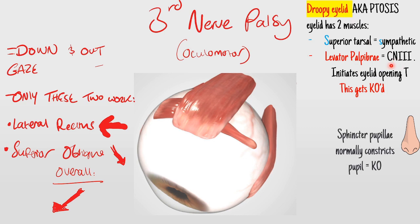Your third nerve is quite a busy nerve - it controls your eye muscles, your eyelid muscles, and also your pupil muscle called the sphincter pupillae. Normally this constricts your pupil, for example in response to light. But if your third nerve is damaged, this muscle is going to be KO'd as well, which means your pupil will be dilated and fixed - it won't respond to light.